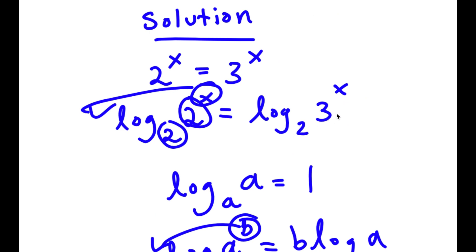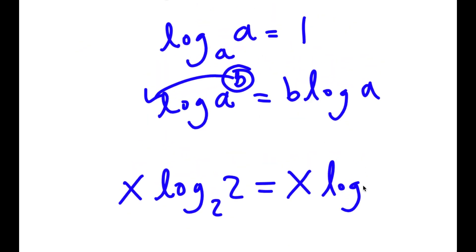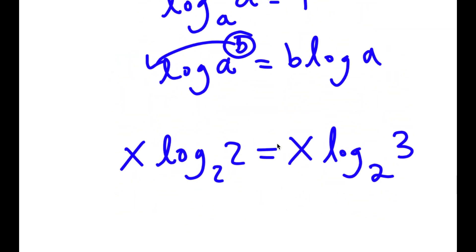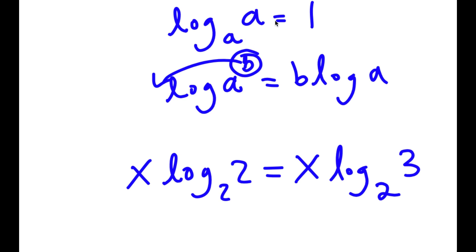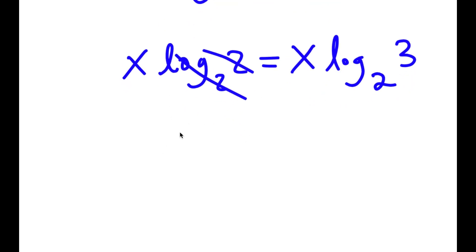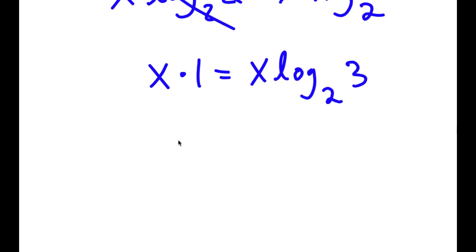I'm going to do the same thing on the right side: log base 2 of 3 to the power of x — I can move x to the front. So now I have x times log base 2 of 3. Remember, log base 2 of 2 equals 1, so that cancels out. I get x times 1 is equal to x times log base 2 of 3, which simplifies to x is equal to x times log base 2 of 3.